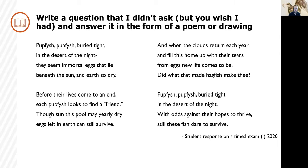For example, on my exams I usually include some version of this prompt: write a question that I didn't ask but you wish I had, and answer it in the form of a drawing or poem. Last year, one student rose amply to the challenge by penning this impressive takeoff on Blake's famous poem, The Tyger, to explain how some members of Cyprinodontidae survive annual droughts: 'Pupfish, pupfish, buried tight in the desert of the night. They seem immortal, eggs that lie beneath the sun and earth so dry. Before their lives come to an end, each pupfish looks to find a friend. Though sun this pool may yearly dry, eggs left in earth can still survive. And when the clouds return each year and fill this home up with their tears, from eggs new life comes to be. Did what that made hagfish make thee? Pupfish, pupfish, buried tight in the desert of the night. With odds against their hopes to thrive, still these fish dare to survive.'